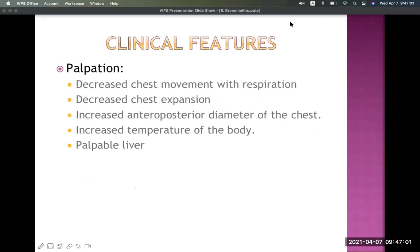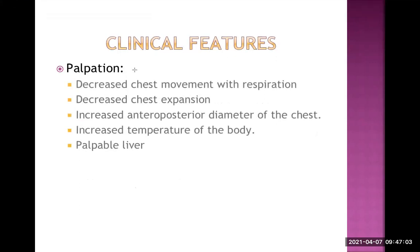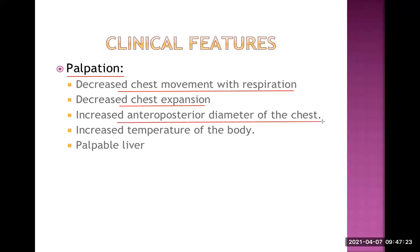The second type of examination is palpation. On palpation, there is decreased chest movement with respiration, decreased chest expansion, and increased anterior-posterior diameter of the chest. Normally, the transverse diameter is more than the AP diameter, but in bronchiolitis the lungs are hyperinflated.